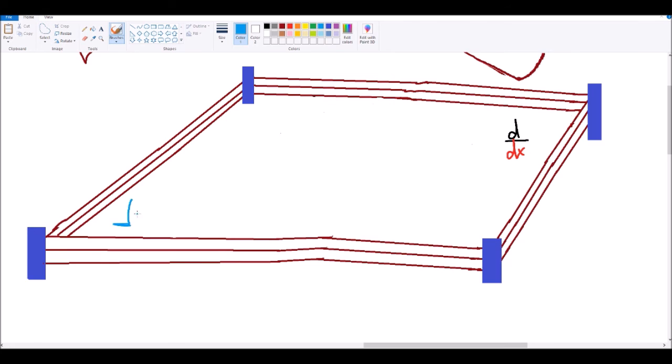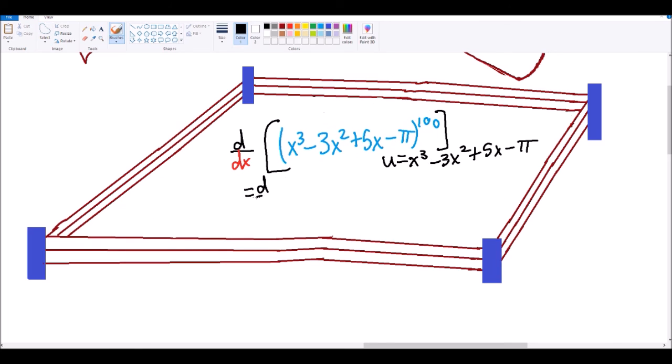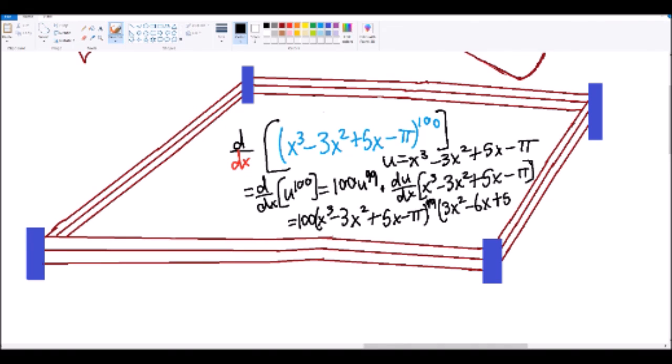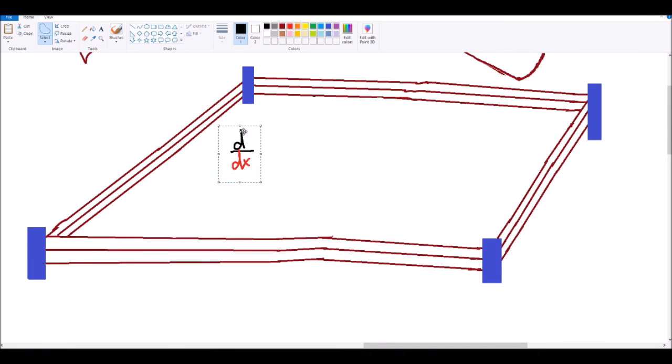Coming into the ring, x cubed minus 3x squared plus 5x minus pi all to the 100th. It's got pi in there! Can the derivative take it down? Oh! It didn't even break a sweat!